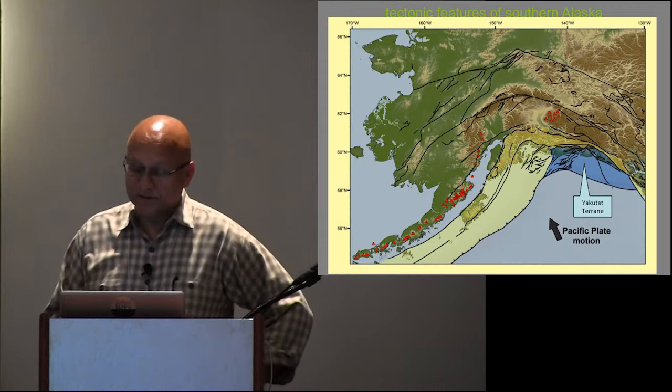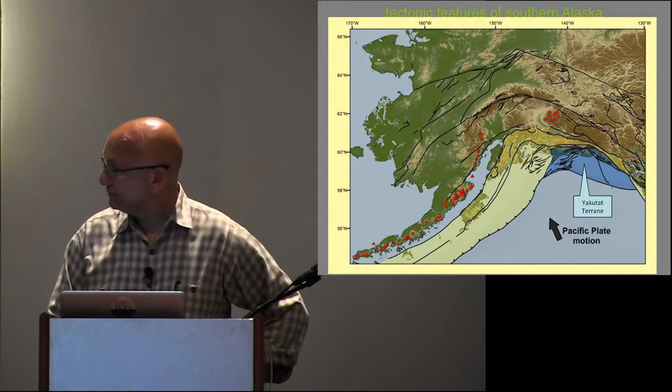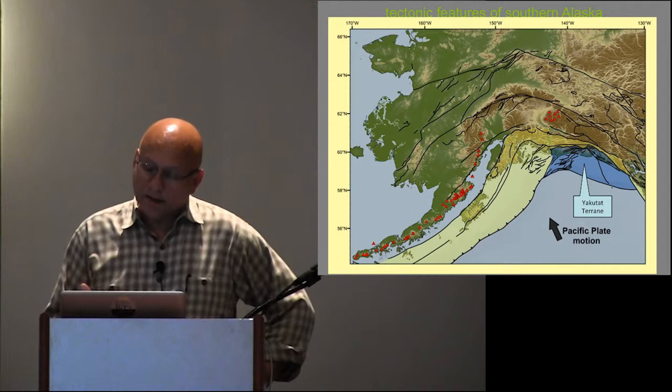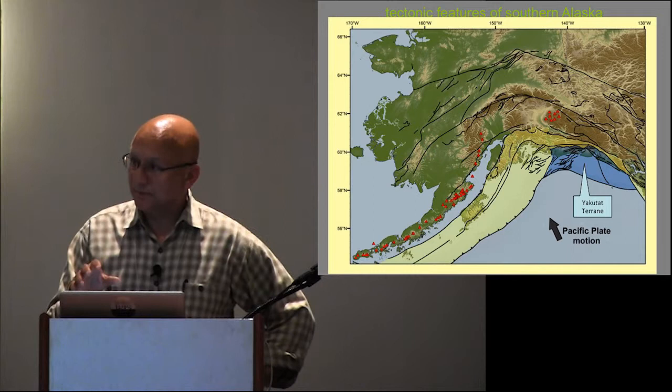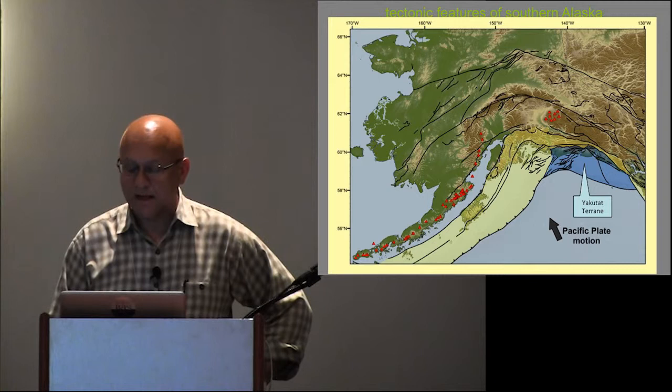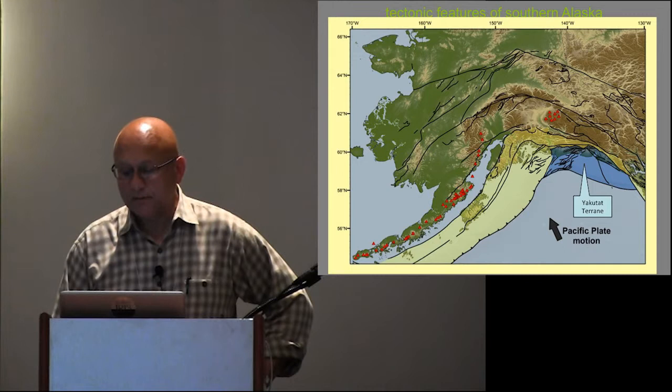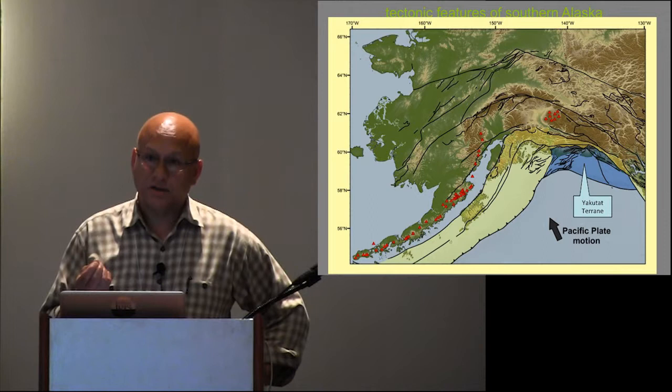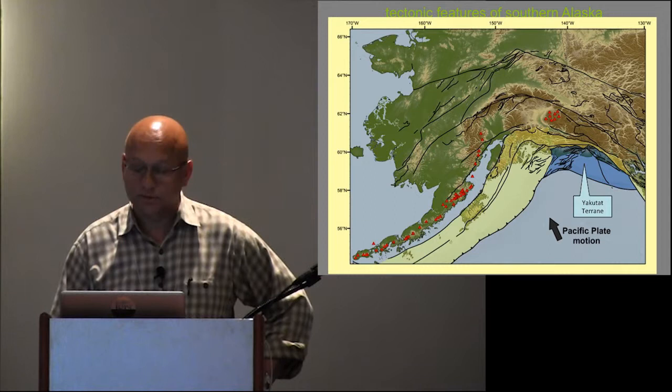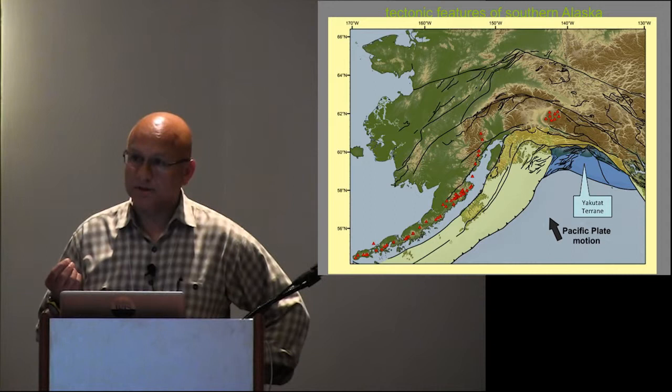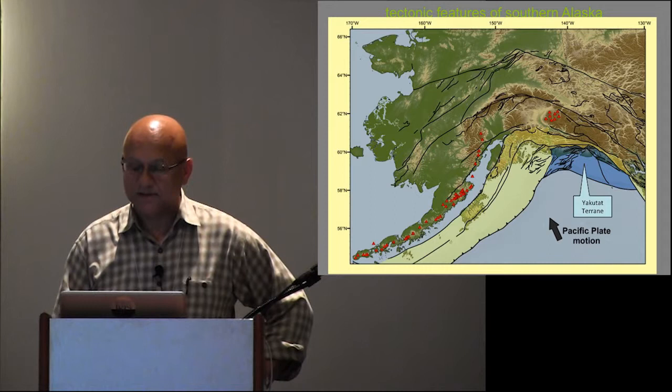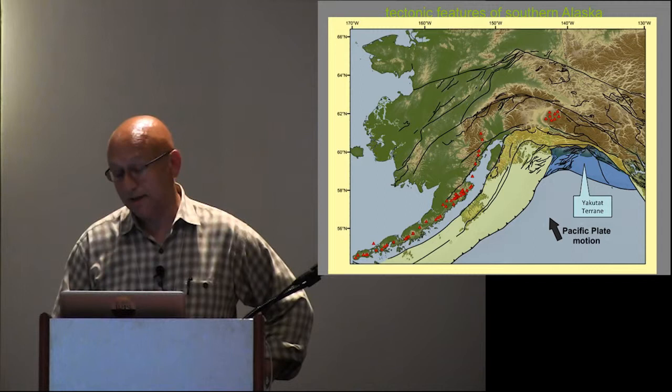To give you some background information on the Yakutat terrain, it was first defined by George Plafker. This area in blue here, in George's model, this terrain had been transported 600 kilometers along the Queen Charlotte Transform Fault and has been colliding into this tectonic corner of Alaska. In the Plafker model, an important thing to remember is that everything west of this line, George had as oceanic crust being subducted. Subduction of that oceanic crust formed the Wrangell Volcanic Field located here. East of that line, George had what he called Continental Crust. As that crust started to enter the subduction zone in George's model the last 10 million years, it resulted in the uplift of the highest coastal mountain range in the world - the Chugach and St. Elias.